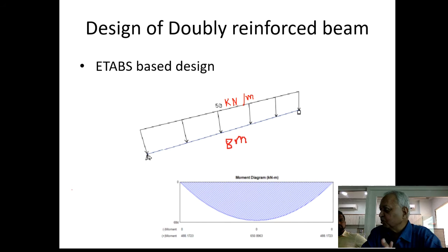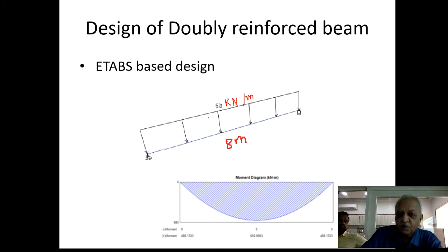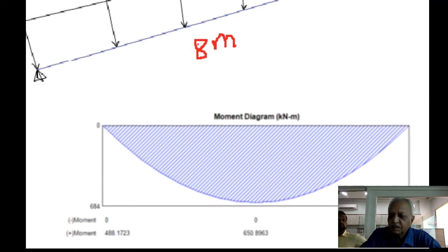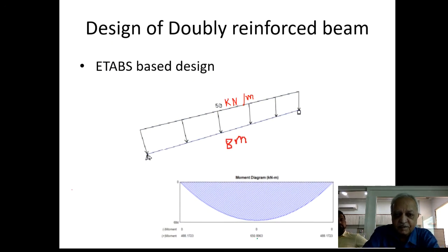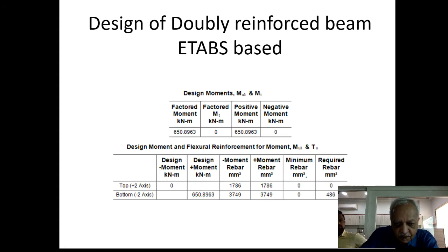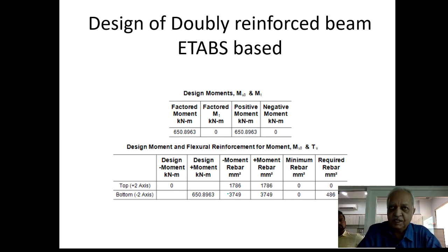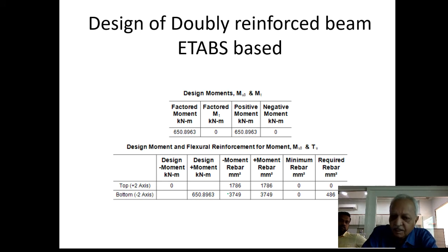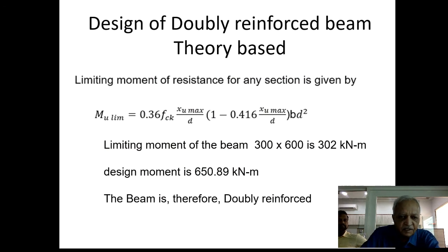For the same 8 m beam but with a larger load of 50 kN/m, the moment becomes approximately 650 kN·m. ETABS gives bottom steel of 3749 mm² and top (compression) reinforcement of 1786 mm² — a doubly reinforced section. This demonstrates that ETABS automatically determines whether a section is singly or doubly reinforced and provides both tension and compression steel for the given moment.